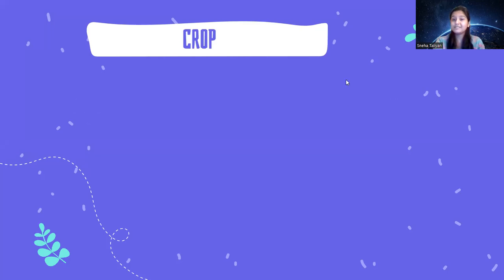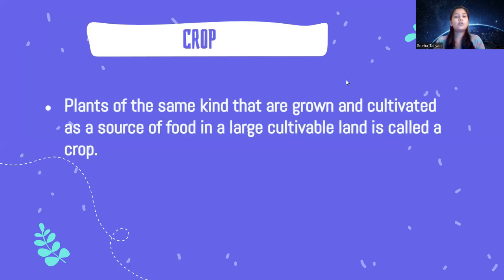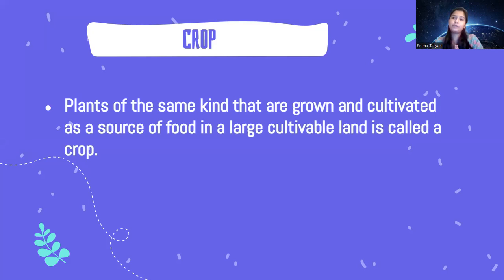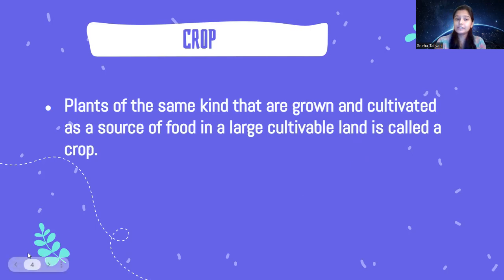How do we define a crop? Plants of the same kind that are grown and cultivated as a source of food in a large cultivable land are called a crop. When I plant one or two plants in my kitchen garden, that is not a crop. A crop is cultivated on a very big land with the purpose of producing food on a large scale.